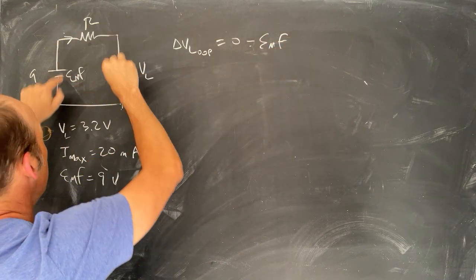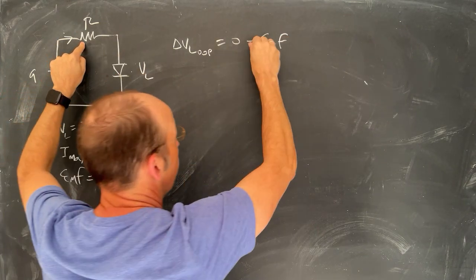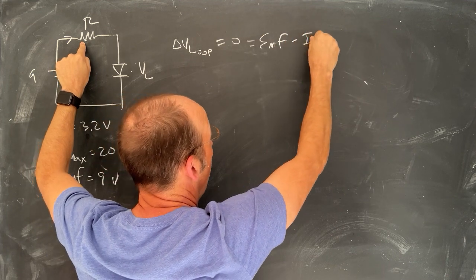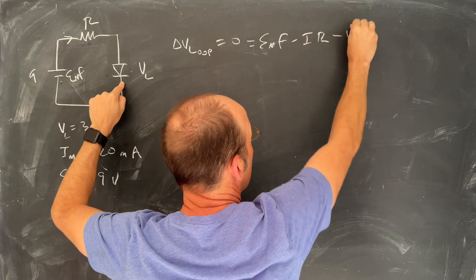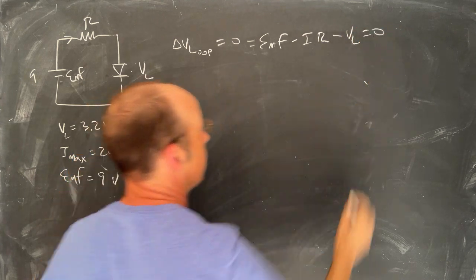And then I have a current coming this way, so the voltage drop across this is going to be IR. And then I have the voltage drop across the LED, which is going to be minus VL, and I want that to be equal to zero.